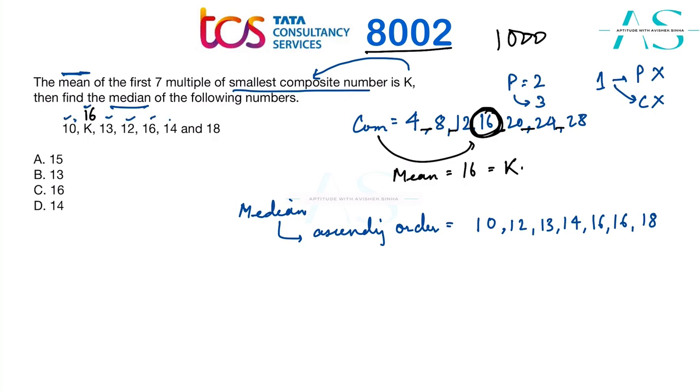Now median is nothing but seven plus one by two-th term, which is the fourth term, and the fourth term here is 14, which becomes the median for the given data.